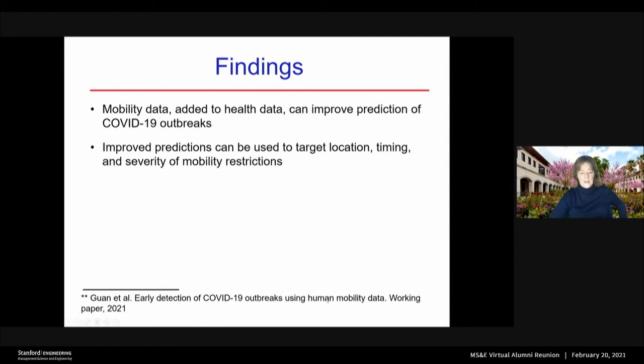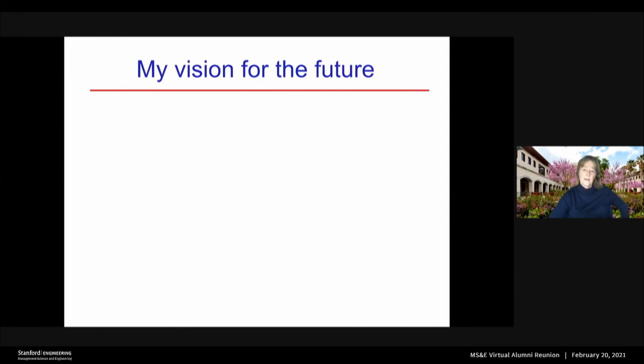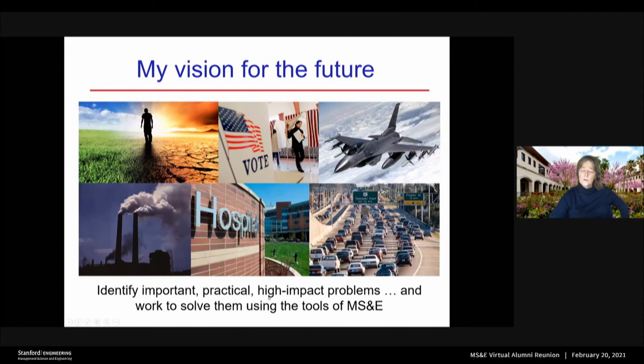This is a working paper that we hope to complete and submit for publication very soon. So I've told you about four different projects we're working on using analytics to inform public health policy and more broadly social policy. I'd like to tell you my vision for what I'd like to see part of the future of MS&E being: we should work to identify important, practical, high-impact problems and work to solving them using the tools of management science and engineering. Thank you very much for listening, and I'm happy to answer any questions.